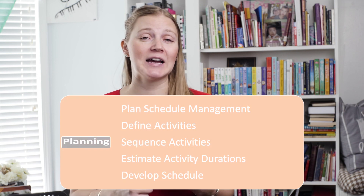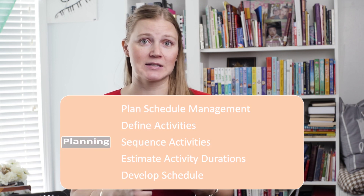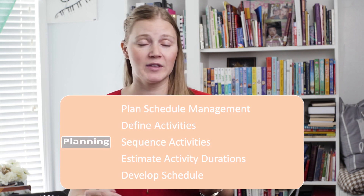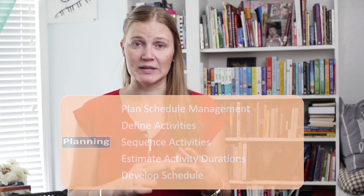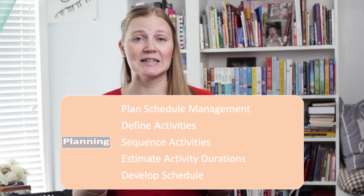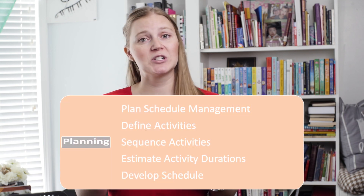The first one is define activities. In this process you are listing out all the activities that need to happen on a project, not necessarily putting them in order, because the next process is called sequence activities. Here you're going to use tools and techniques to see which activities are dependent on other activities, which activities should go first or later, or that can happen simultaneously.